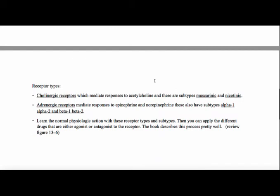You also have to look at receptor types. Cholinergic receptors usually go along with the parasympathetic nervous system — this typically mediates responses to acetylcholine. There are two subtypes within it, which are the muscarinic and nicotinic. You'll hear these in anticholinergic or cholinergic medications — it's either the agonist or an antagonist. Muscarinic and cholinergic essentially mean the same thing.